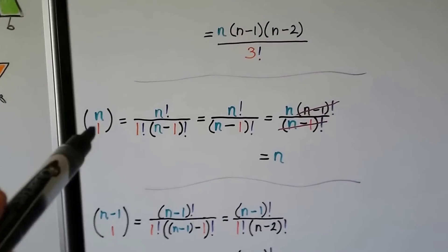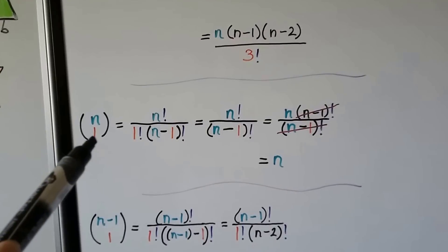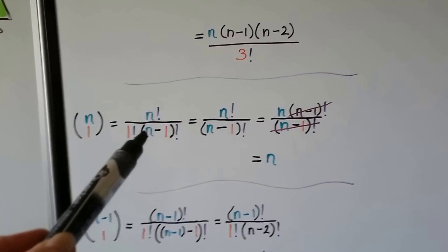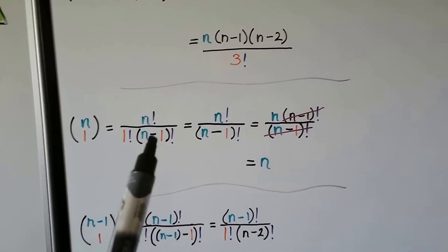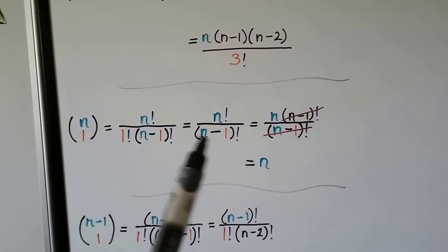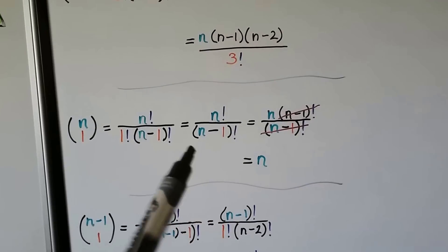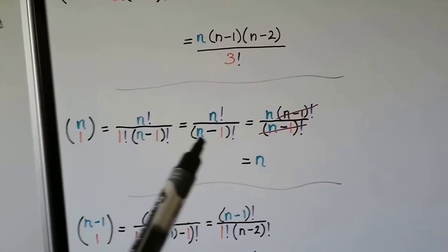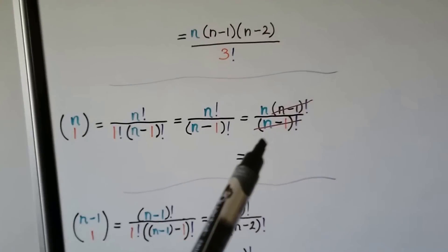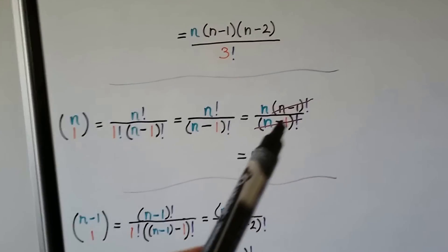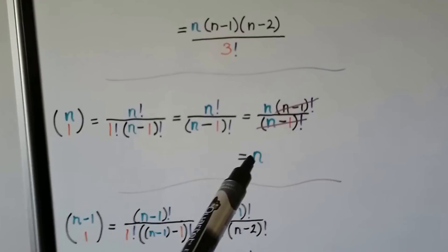Now for n choose 1: we have n factorial over 1 factorial times n minus 1 factorial. Since we're multiplying by 1, that's just n minus 1 factorial. We write n factorial with a factor of n minus 1 factorial, cancel them out as common factorials, and that leaves us with n. So n choose 1 equals n.